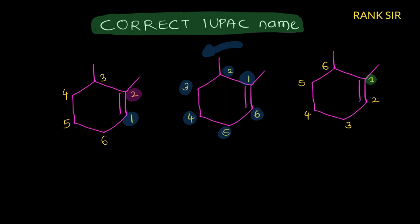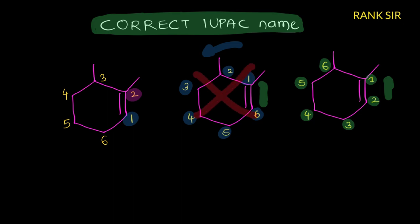Lowest number for the multiple bond and also lowest number for the substituent: one, two, three, four, five, six. When we are giving numbers to the carbon chain, the double bond should get consecutive numbers — one-two or two-three. Here the multiple bond is having one-six, not one-two, therefore this is a wrong representation. This is also a wrong representation.